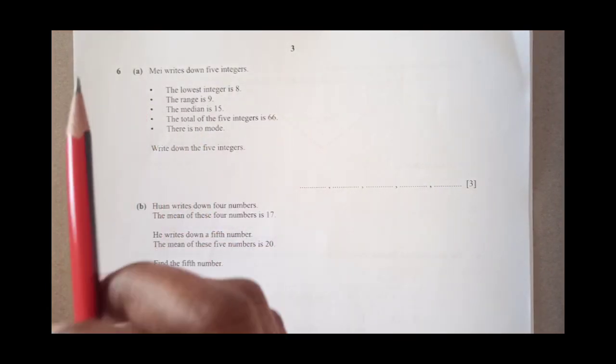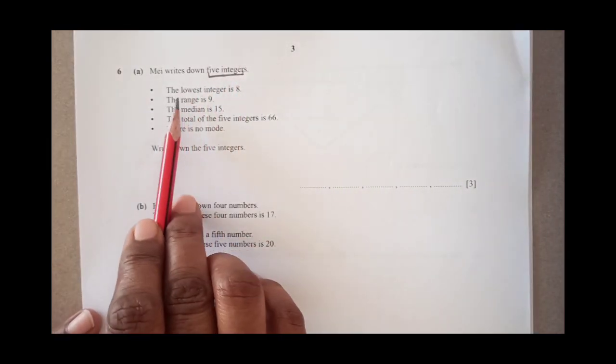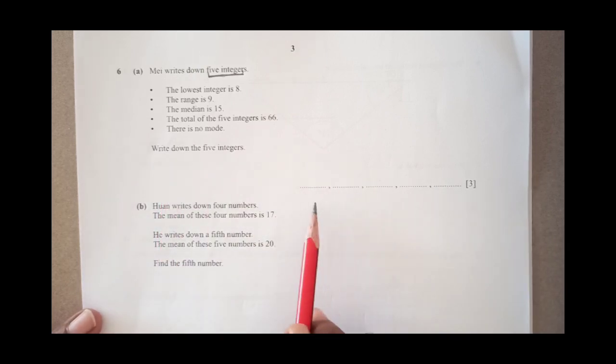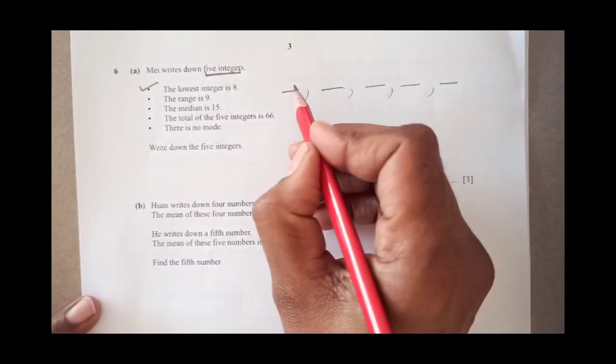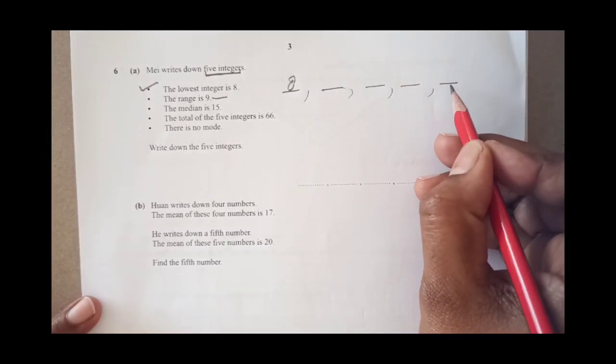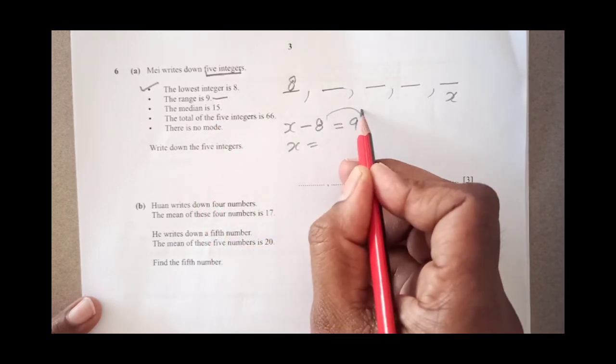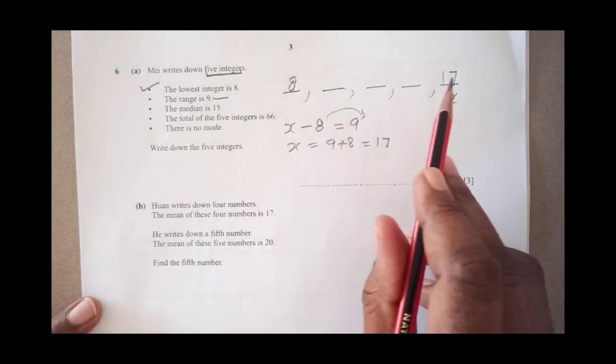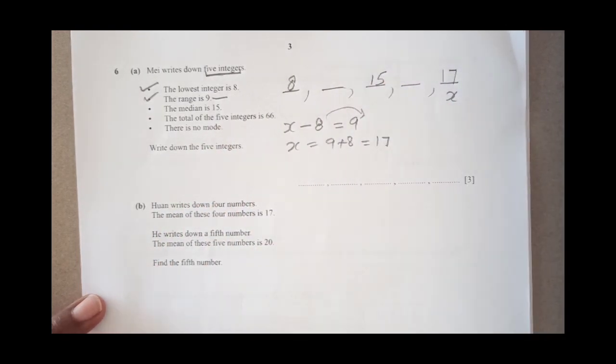Let us do question number 6. We have here some conditions given. May writes down 5 integers. Always underline the keyword so that you do not miss out any information. 5 integers. The lowest integer is 8. The range is 9. Median is 15. Total of 5 integers is 66. There is no mode. Write down all the 5 integers. What I will suggest you make spaces like this. The lowest integer is 8, meaning lowest is 8 here. The range is 9. Range is maximum value minus minimum. Maximum value will come here. Let's say this is x. Meaning x minus 8 is going to be equal to 9. That gives you x equals to 8 plus 9, that is 17. That means this number comes out to be 17.